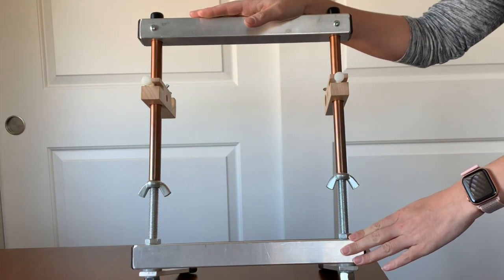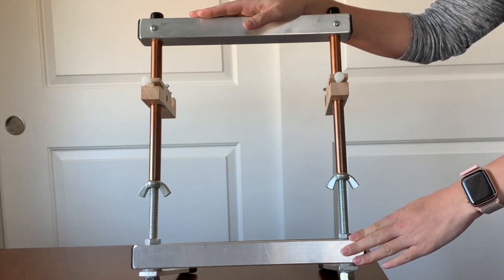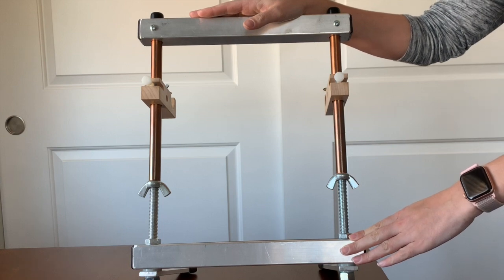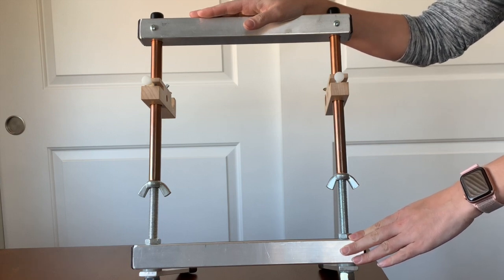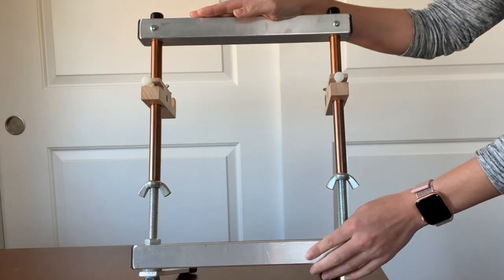This is very important for this particular method of warping because your piece is going to be exactly as long as your loom is tall from the top of the bottom beam to the bottom of the top beam.